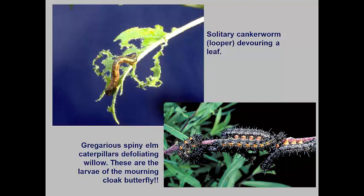Some, like the mourning cloak butterfly, have larvae that feed gregariously on elm and willow. These larvae are called spiny elm caterpillars and they are rarely the cause of damage that warrants control.